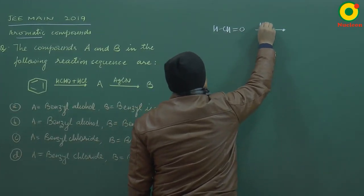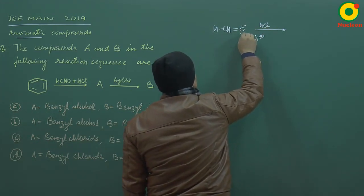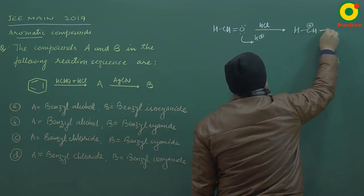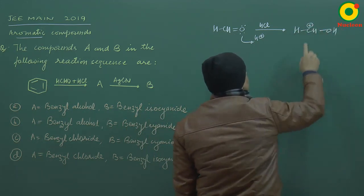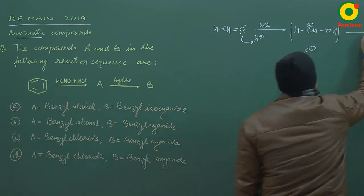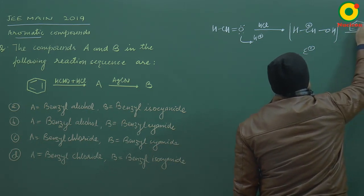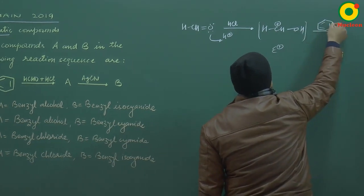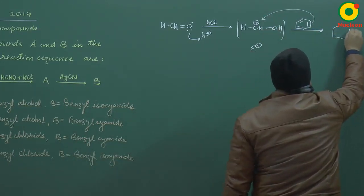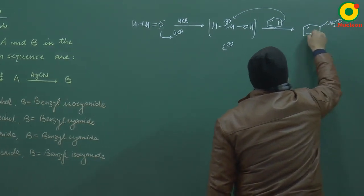सबसे पहले protonation हो जाएगा। Protonation होने से ये बन जाएगा plus charge और ये OH। यह एक electrophile है। जब यह benzene पर attack करेगा तो क्या बनेगा? Benzene पर attack करेगा तो ये बन जाएगा CH2OH - benzyl alcohol।